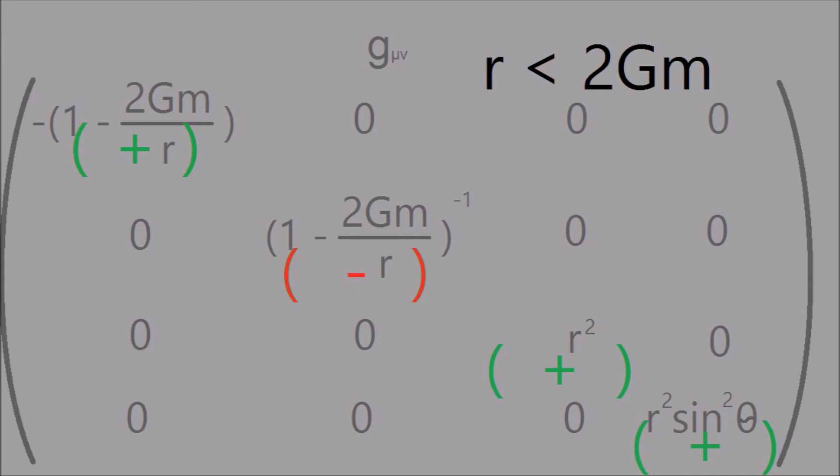Below the horizon, the metric is positive, negative, positive, positive. These values may be inverted, but the inversion between 0,0 and 1,1 will still be present.